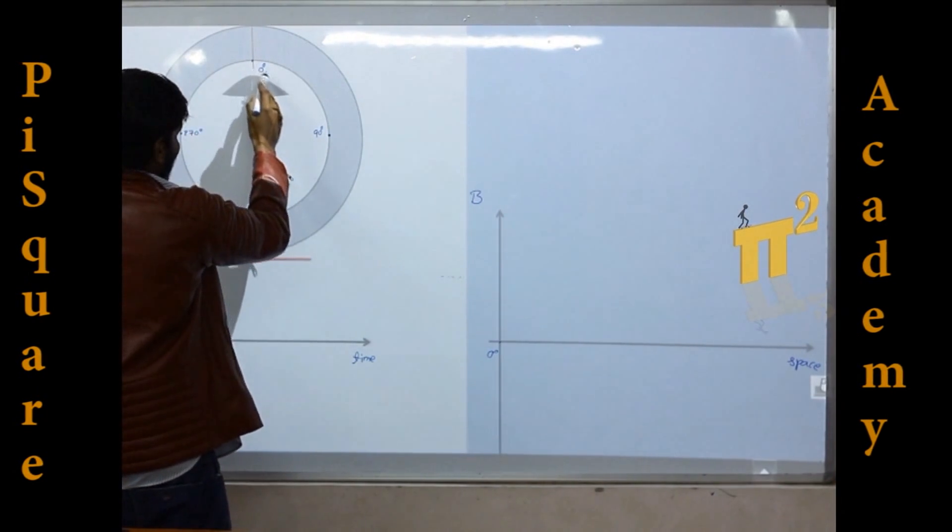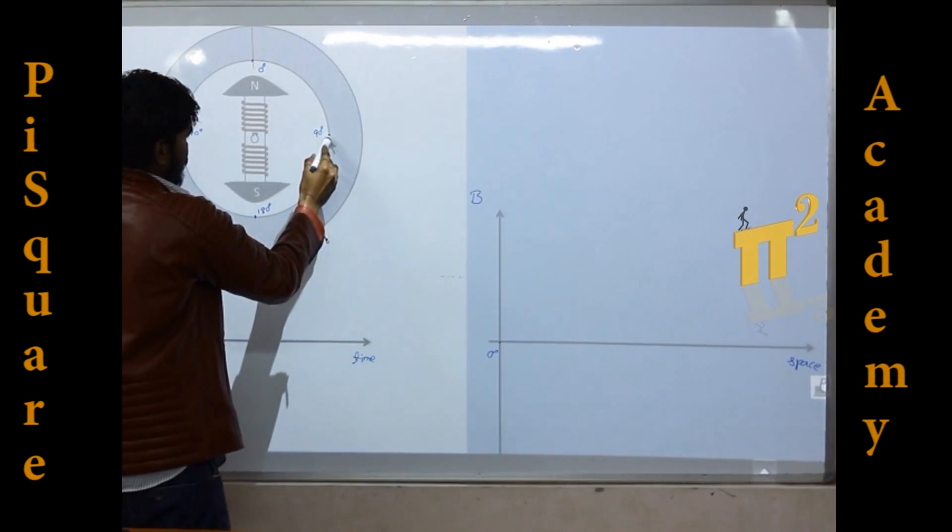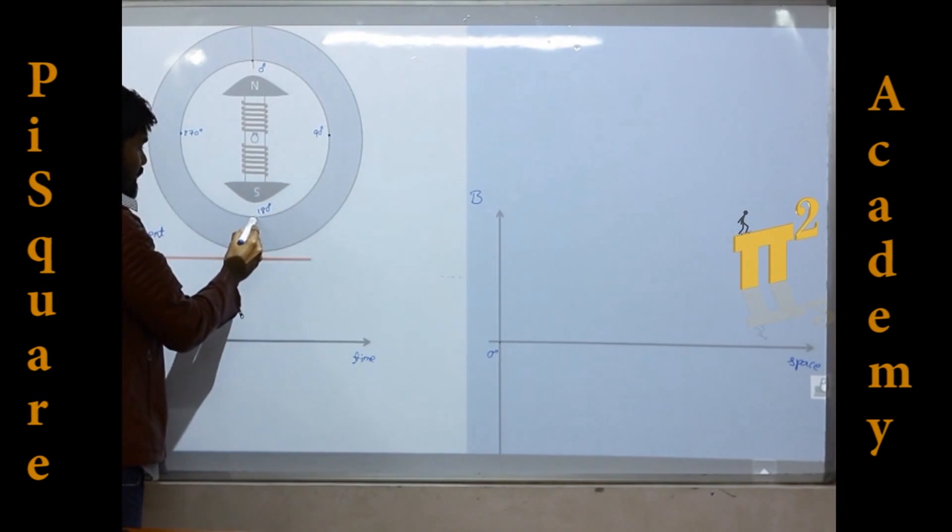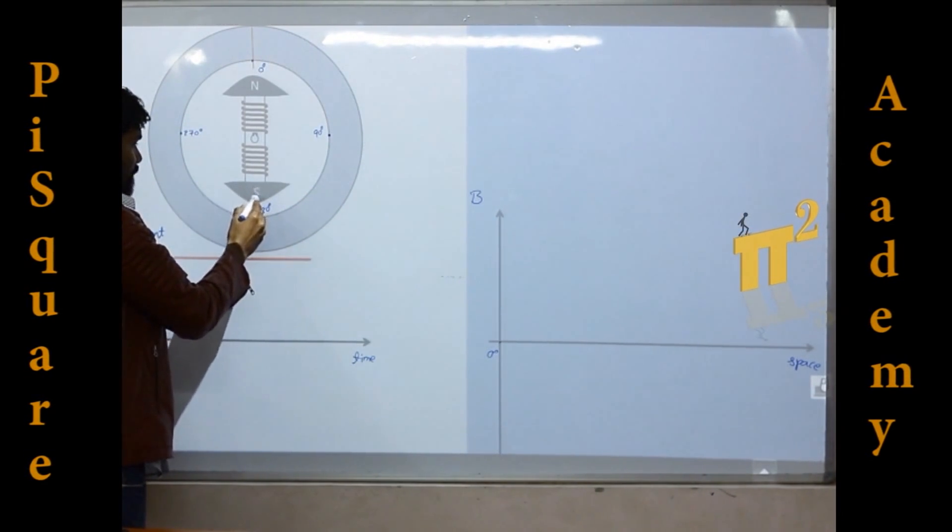And the flux density will be 0 at this instant, and here flux density is negative maximum because we have a south pole here.